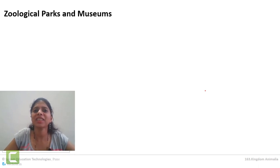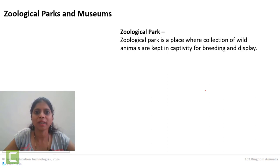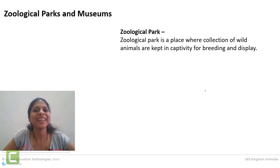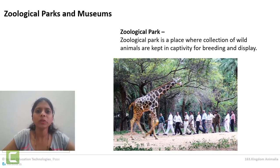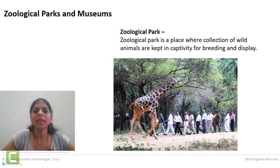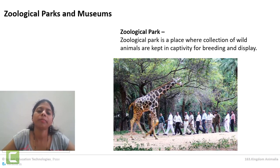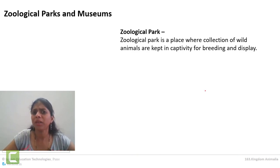About zoological park: a zoological park is the place where we go and see animals. Here in the zoological park, animals are kept in captivity in cages and we can go and see them. This is a way by which we can see many wild animals. In the zoo, animals are taken care of and many times animal breeding also takes place in the zoological park.